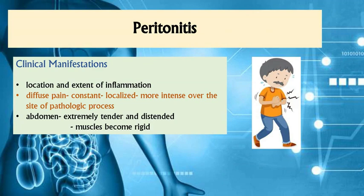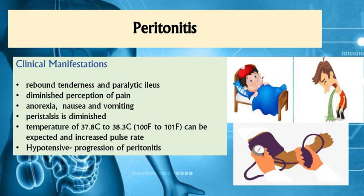Clinical manifestations for peritonitis depend on the location and extent of inflammation. Pain is very evident for clients diagnosed with peritonitis. Their abdomen is also extremely tender and distended, and their abdominal muscles become rigid. Other manifestations include rebound tenderness over the abdomen, as well as having a paralytic ileus.